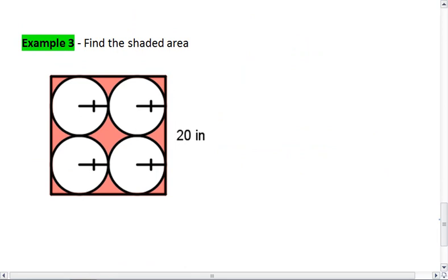How about this example? Not quite looking at sector area here, but this is still an interesting example to try. I want you to find the area of the shaded region, so only the shaded area that you see here, not the white area. This 20 is the length of the side of this figure.